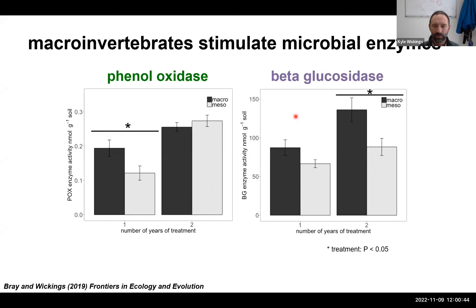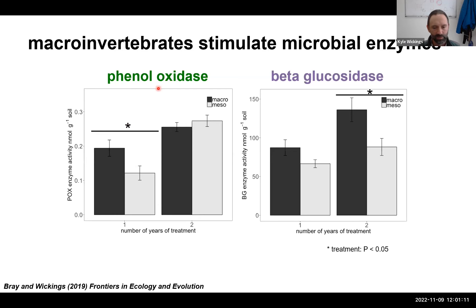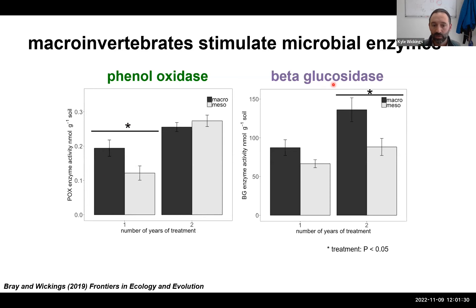Shifting to microbial activity, she saw similar patterns. Two different enzymes showed invertebrate responses: in year one, phenyloxidase — important for breaking down decay-resistant material like lignin — was stimulated by invertebrate presence. In year two, beta-glucosidase — involved in late-stage cellulose breakdown — also increased in the presence of soil macroinvertebrates. Two very different enzymes, but the same direction of response: not only stimulating microbial biomass but also their activity.